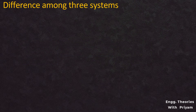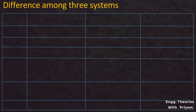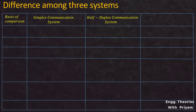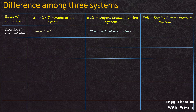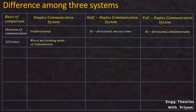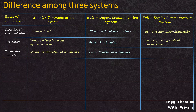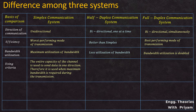Now let us compare all three systems. The basis of comparison includes: direction of communication — simplex is unidirectional, half duplex is bi-directional but one at a time, and full duplex is bi-directional and simultaneous. For efficiency, simplex is the worst performing mode, half duplex is better than simplex, and full duplex is the best. For bandwidth utilization, simplex has maximum utilization, half duplex has less utilization than simplex, and full duplex doubles the bandwidth.